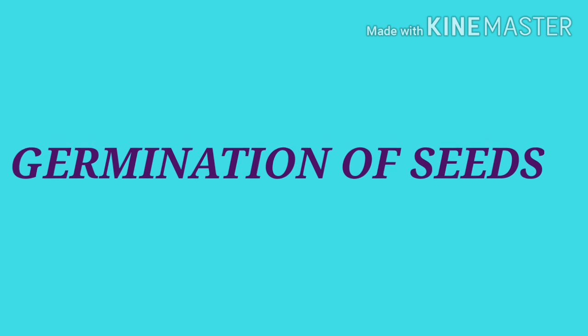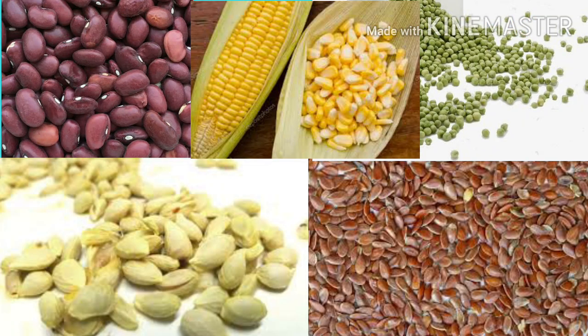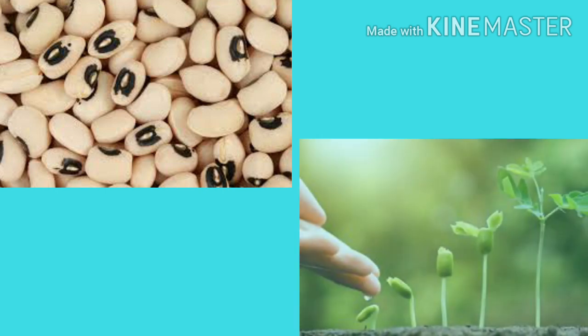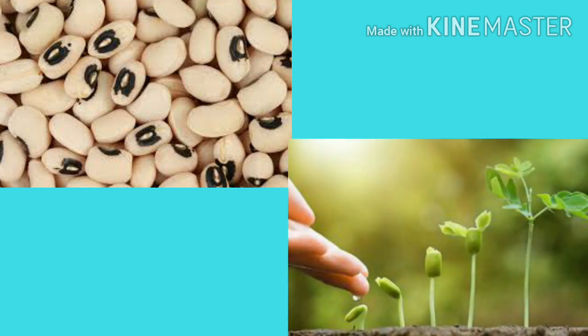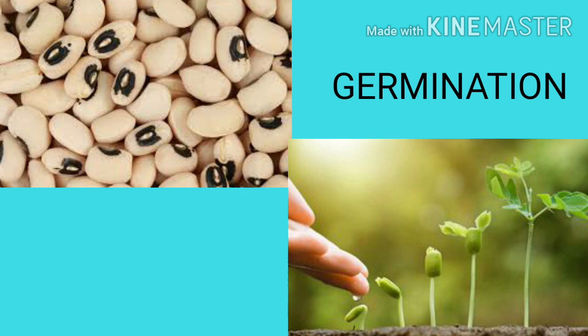Seeds can remain dormant for months and years. Because of this, edible seeds can be stored for later use. Seeds germinate only under favorable conditions. The process by which the dormant embryo within the seed becomes active, grows, and forms a seedling or a young plant capable of independent existence is called germination.